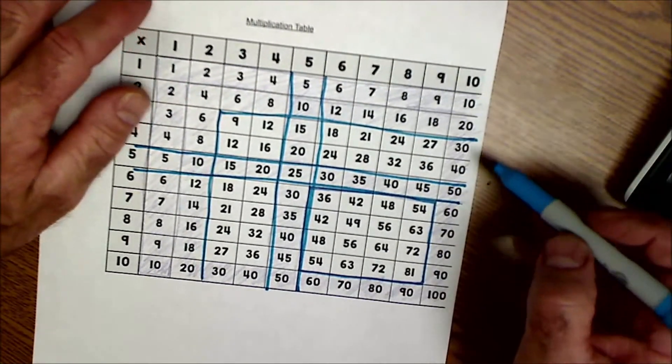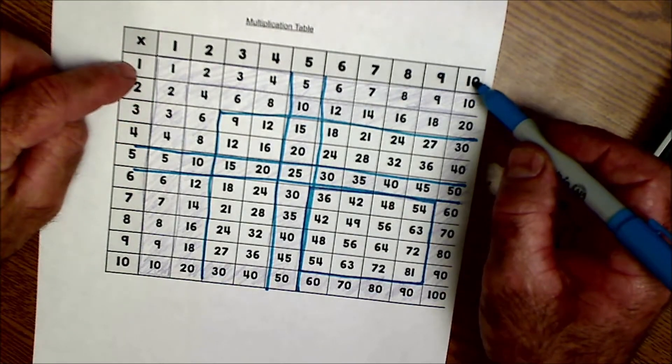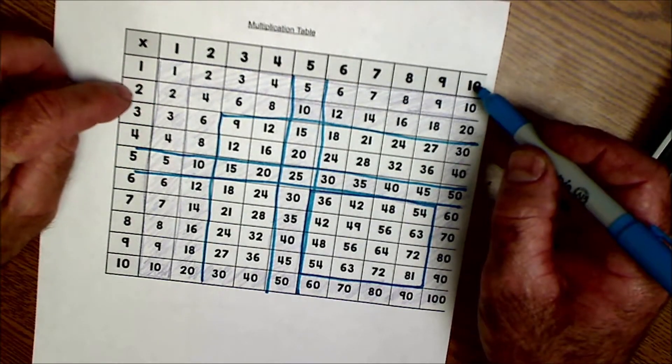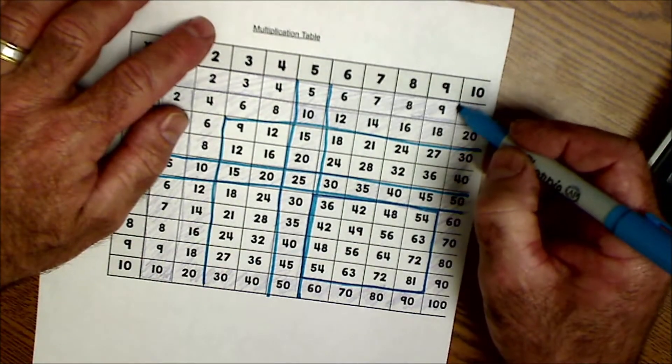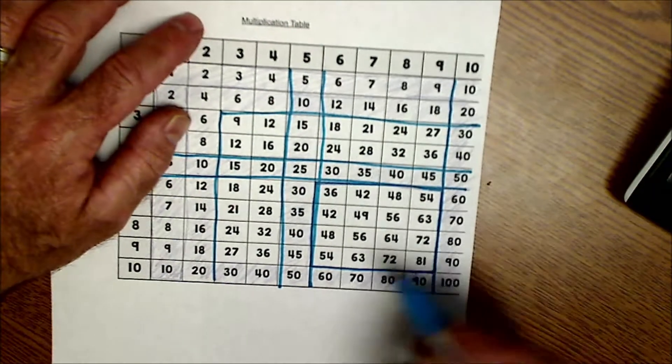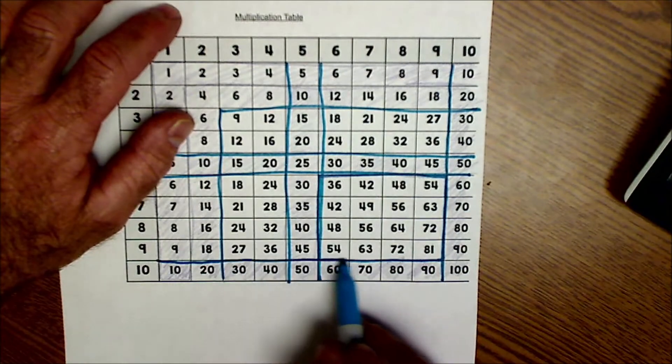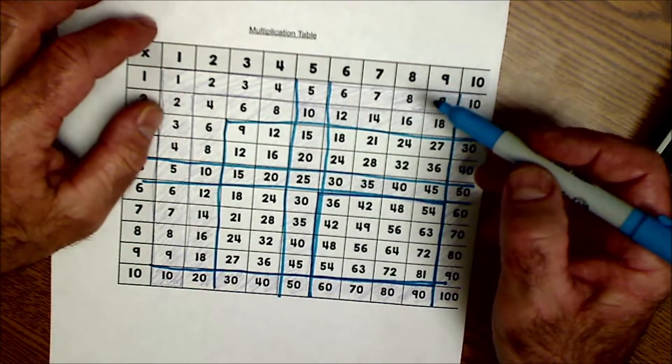Then the next ones that are really easier are the 10's. 1 times 10, you just put a 0 on there. So 2 times 10 is 20, 30, 40, 50. So that's this whole column and then this whole row. So now we really don't have that many left.